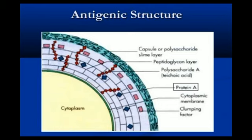Moving on to its antigenic structure: the outermost layer of the cell is made up of a polysaccharide slime layer. The middle layer is the peptidoglycan layer, shown as a black brick-like structure. Then there is polysaccharide A, teichoic acid shown as a chain-like red structure, and Protein A shown as a blue square-like structure. The cytoplasmic membrane is a greenish layer, and the clumping factor is a red brick-like structure. This is the antigenic structure of the Staphylococcus bacterial cell.